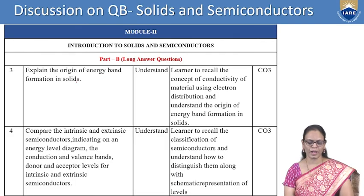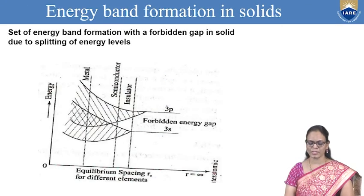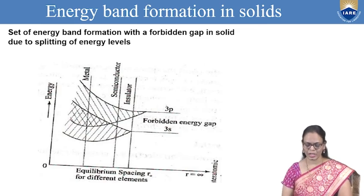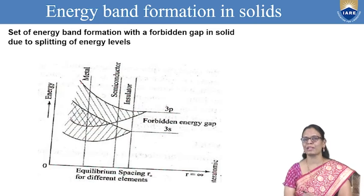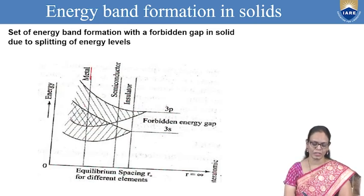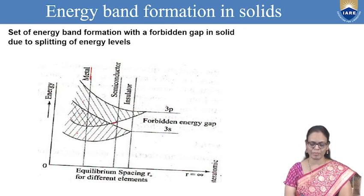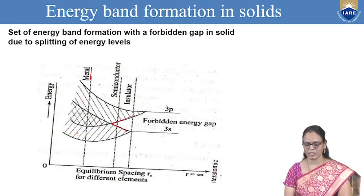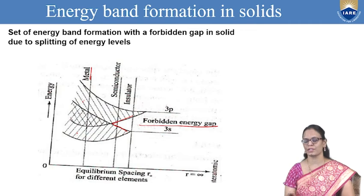For the origin of energy band formation in solids: plotting equilibrium spacing versus energy for different materials — in metals there is an overlap between the valence band and conduction band; in semiconductors there is a small forbidden energy gap; and in insulators the gap is large. This is how we explain the classification based on the energy gap.